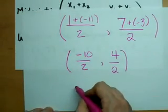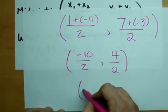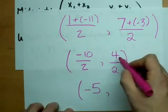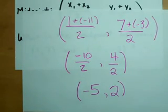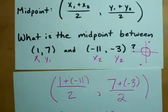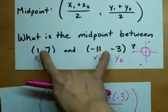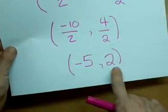And we can even do this division. Negative 10 divided by 2 is negative 5. 4 divided by 2 is 2. Alright, so that means that the midpoint between these two is (-5, 2).